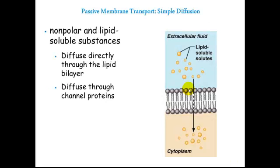The next thing we will look at is how materials can cross the plasma membrane. The plasma membrane is said to be selectively permeable — only certain chemicals should be able to pass. The first manner in which chemicals may pass is simple diffusion, which is movement from areas of high to low concentration — along a concentration gradient. Like a ball rolling downhill. Simple diffusion occurs directly through the phospholipid bilayer and requires very small, nonpolar, and lipid-soluble substances.